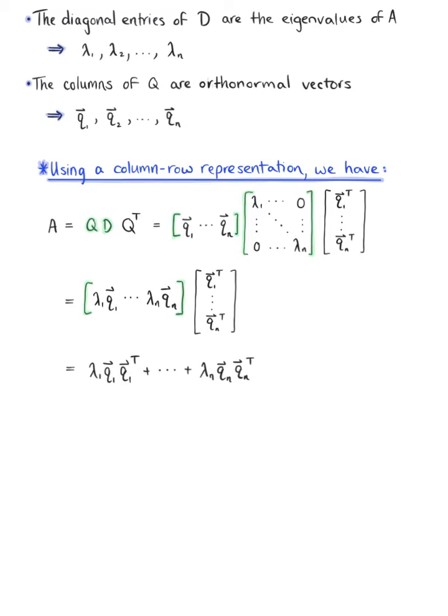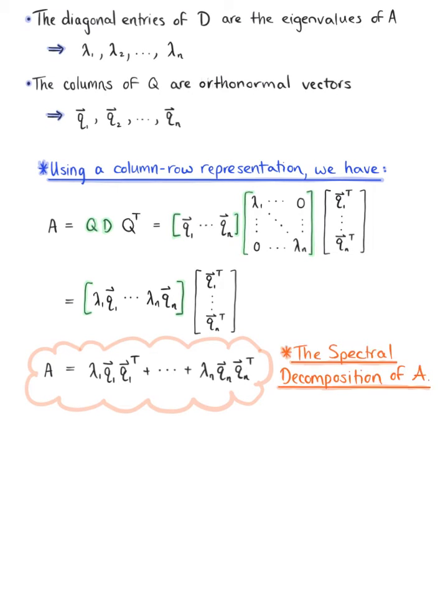This linear combination representation of matrix A is what we call the spectral decomposition of matrix A. Using our knowledge of subspaces and bases and dimension and rank, when we look at this spectral decomposition...